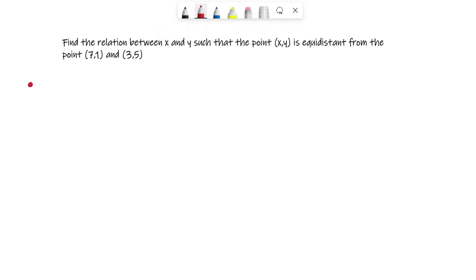So you have two coordinates here involved: (7,1) and the other one is (3,5). And in the center let's say we have a point (x,y). They are saying they are equidistant, which means AP value is equal to PB. So let's find AP first because they said it is equidistant, which means AP will be equivalent to PB.